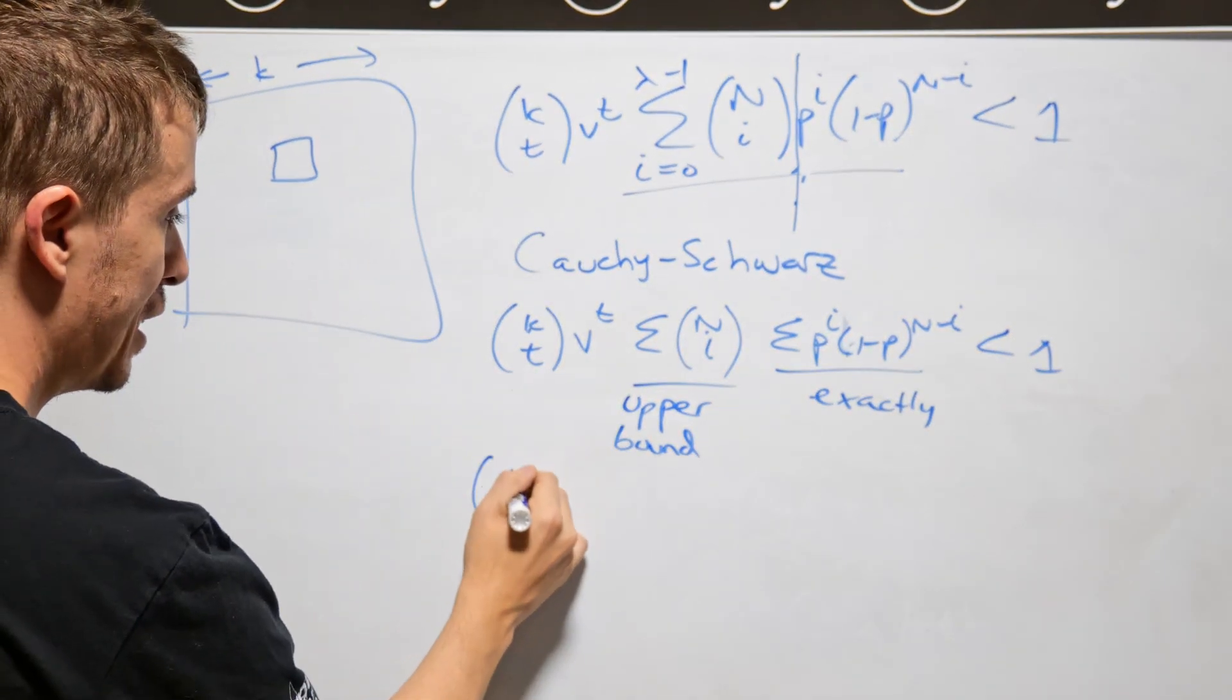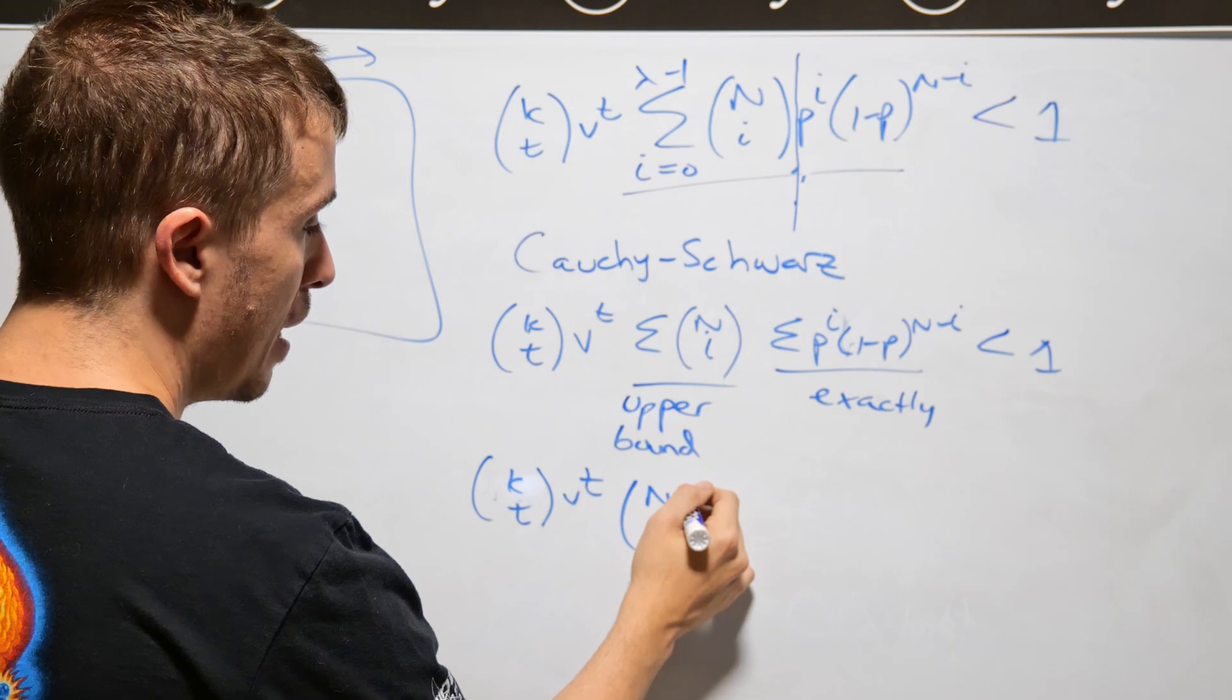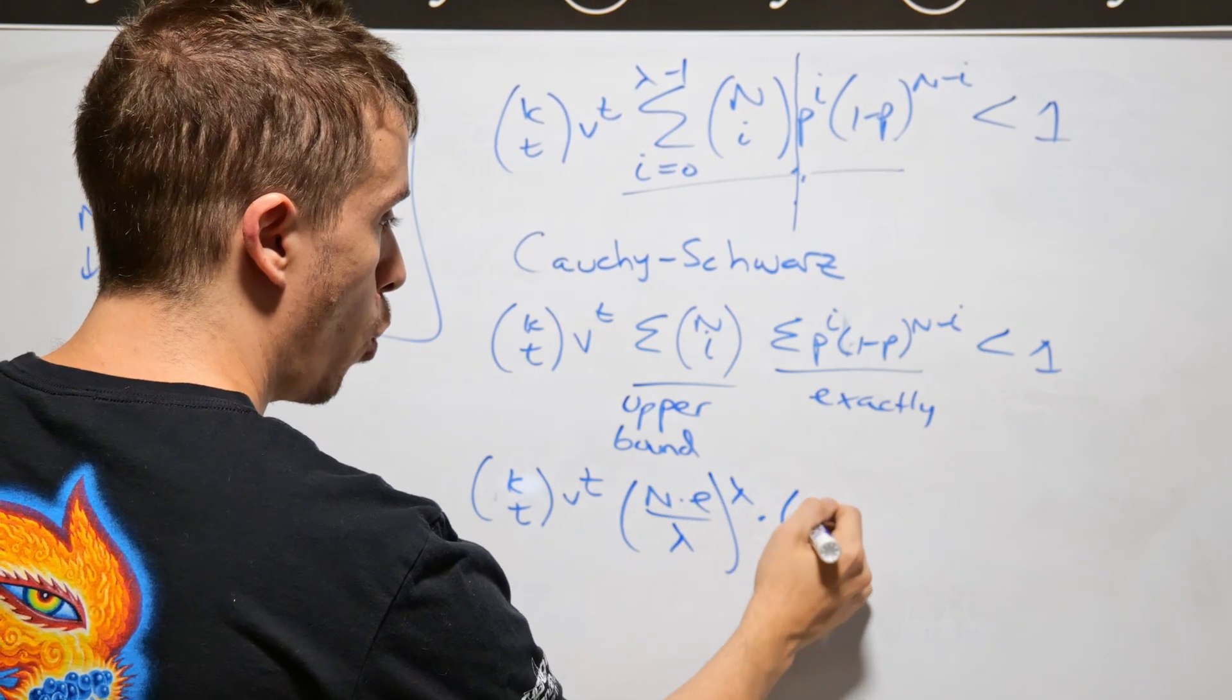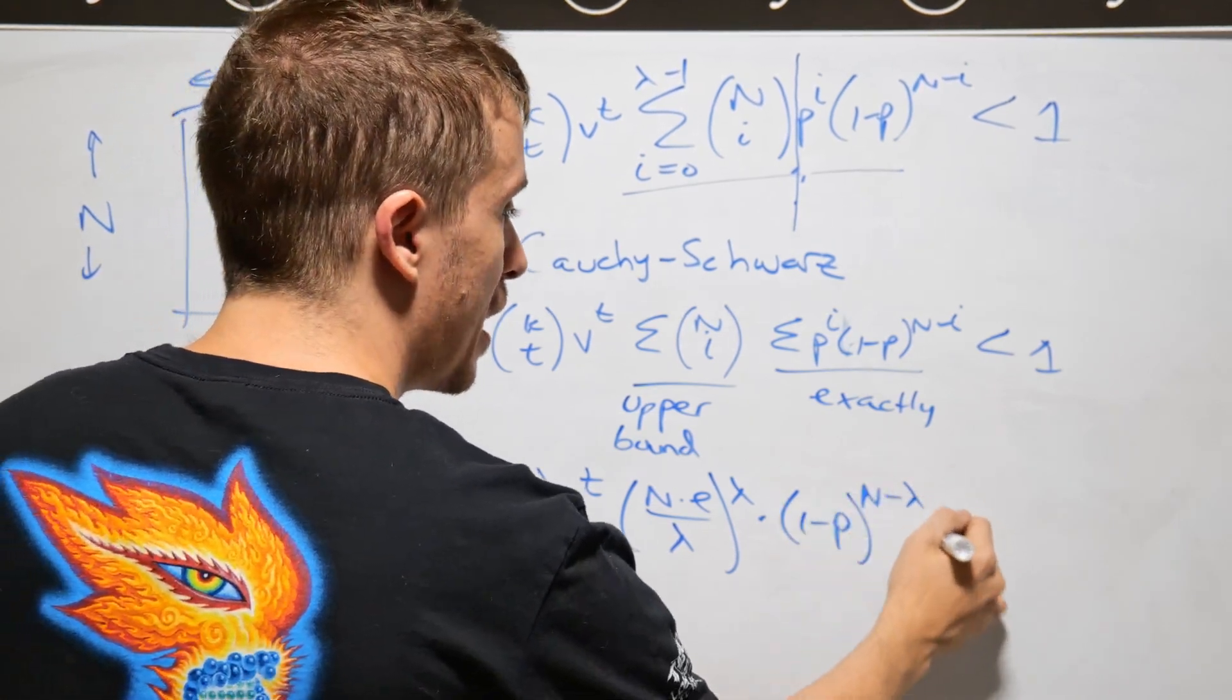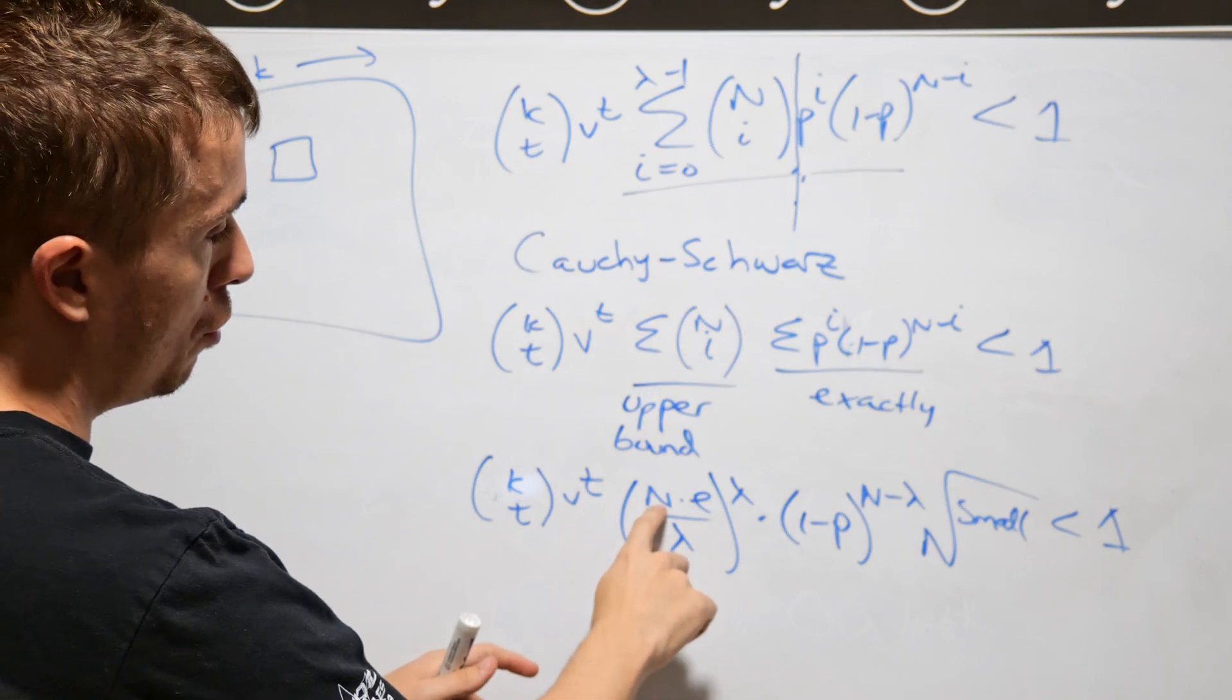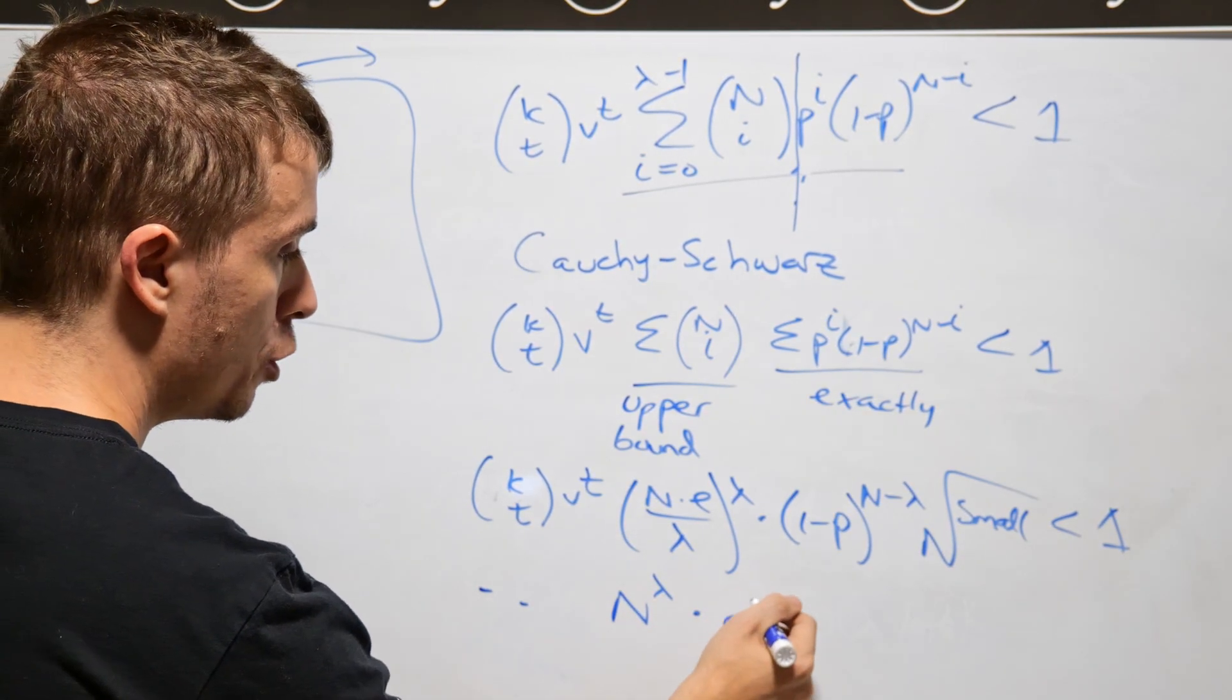Okay, so then what you're going to get is k choose t, v to the t, times some upper bound on this, which is going to be, in this case I happen to get n times e, that number e, divided by lambda to the power lambda, times 1 minus p to the something n minus lambda, something like this, times something small, and then that's less than 1.